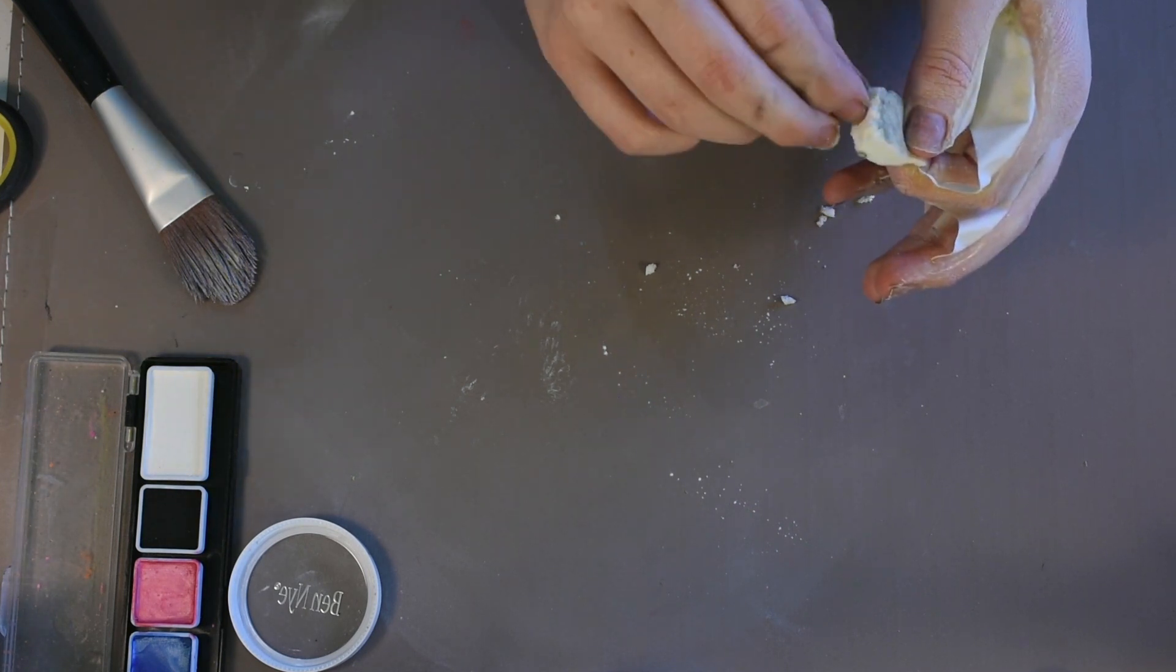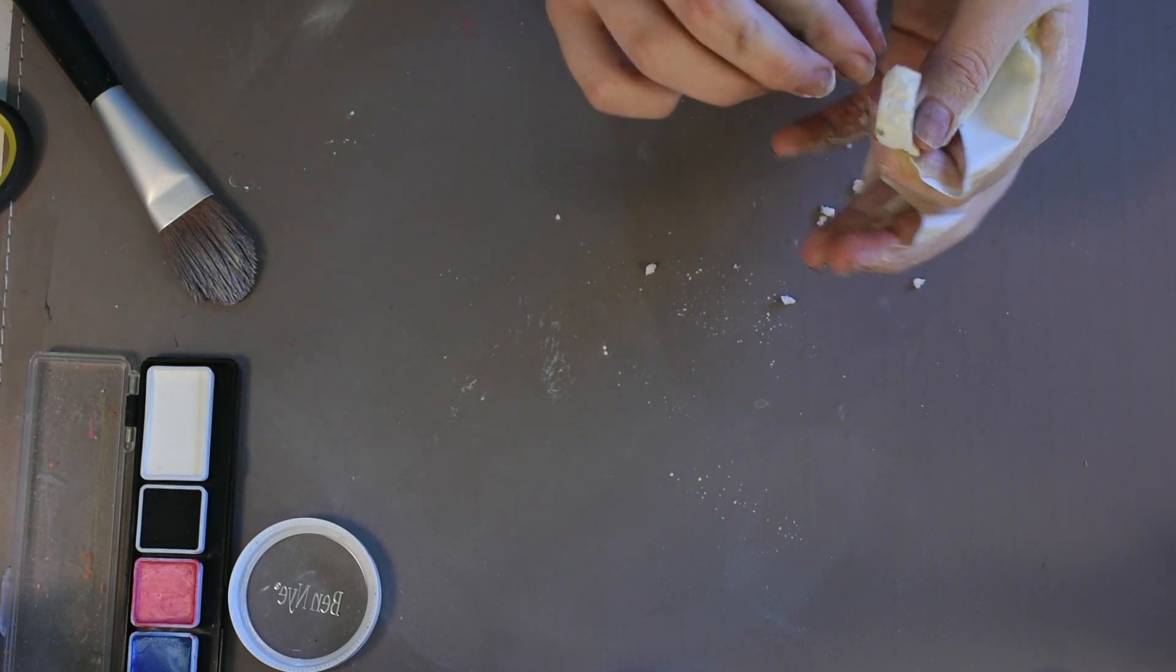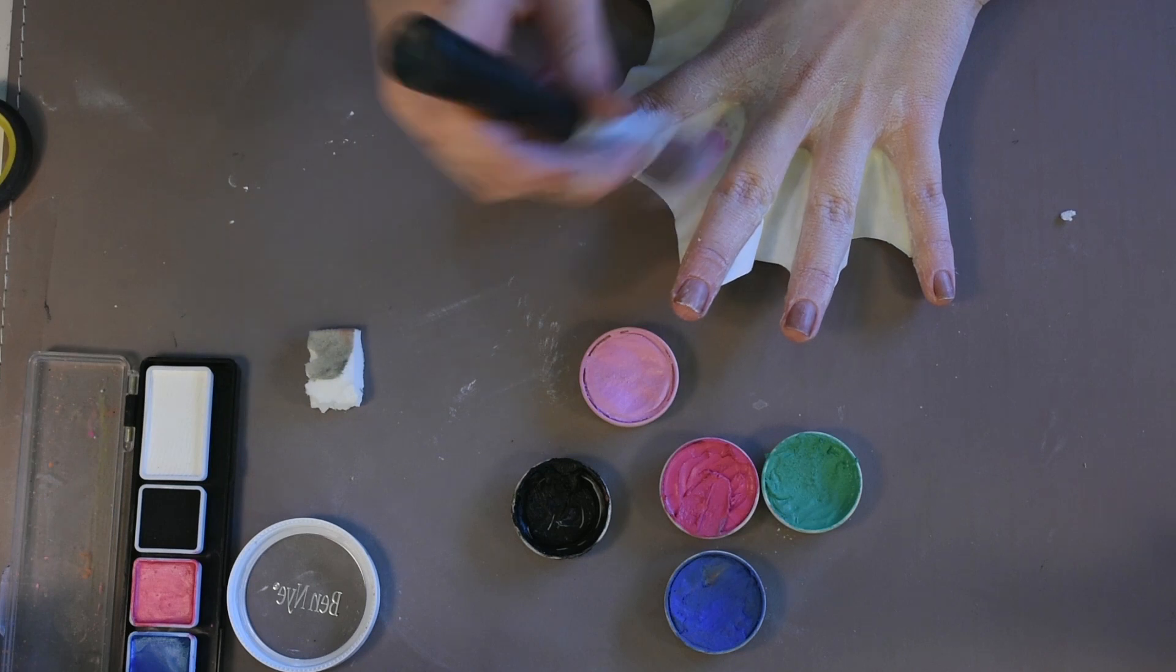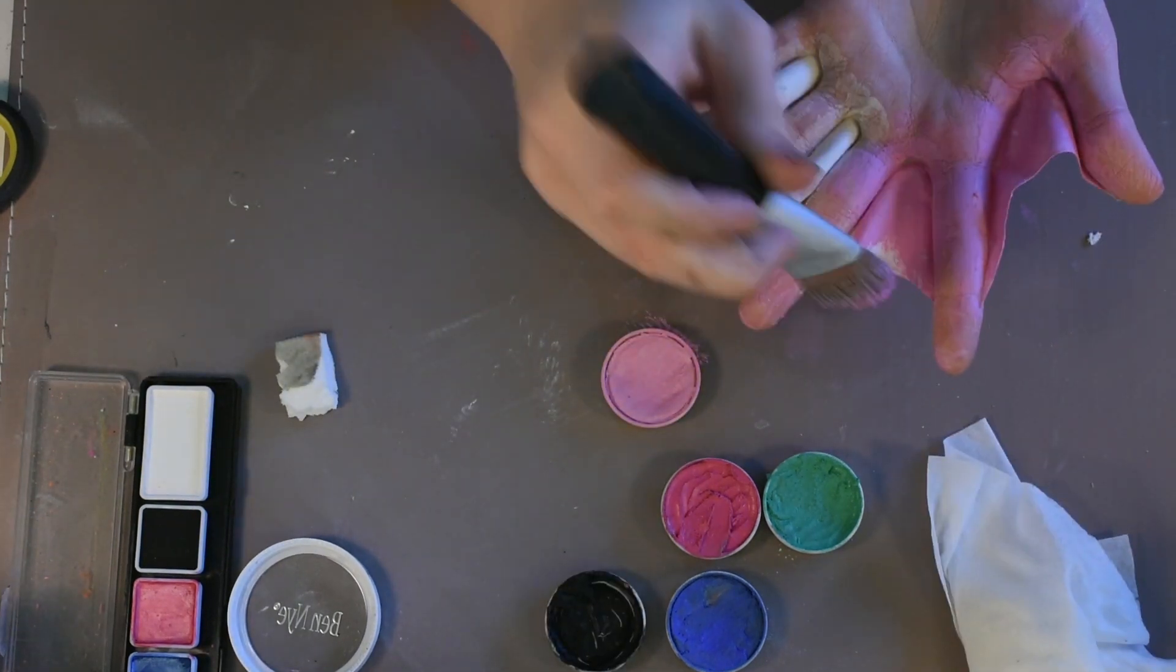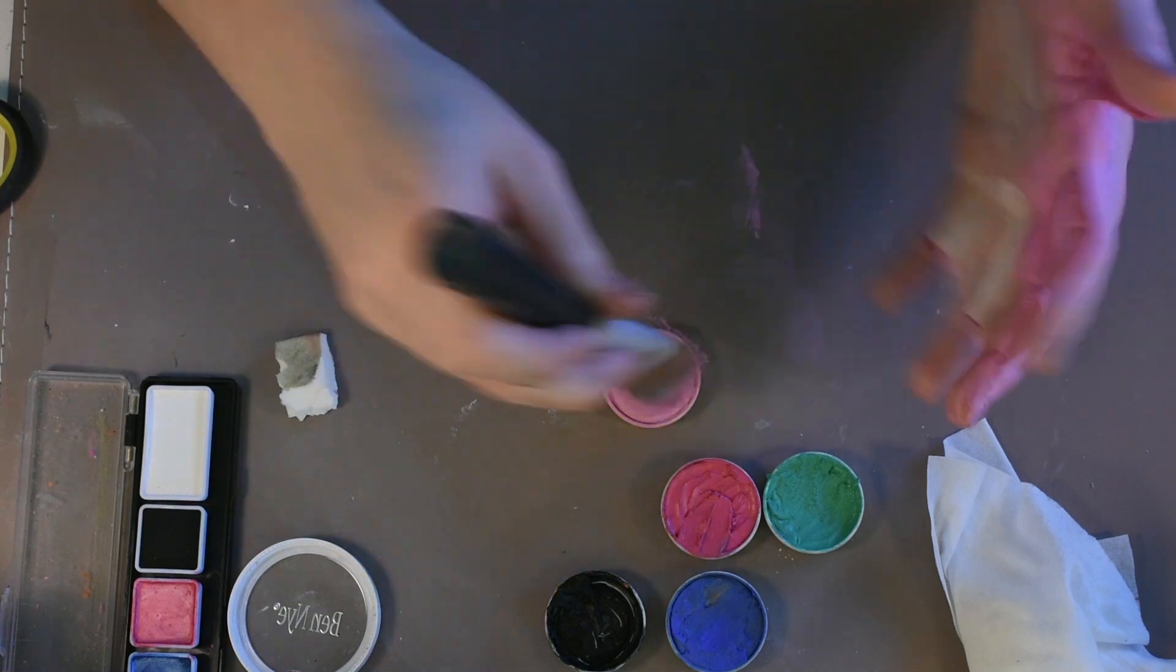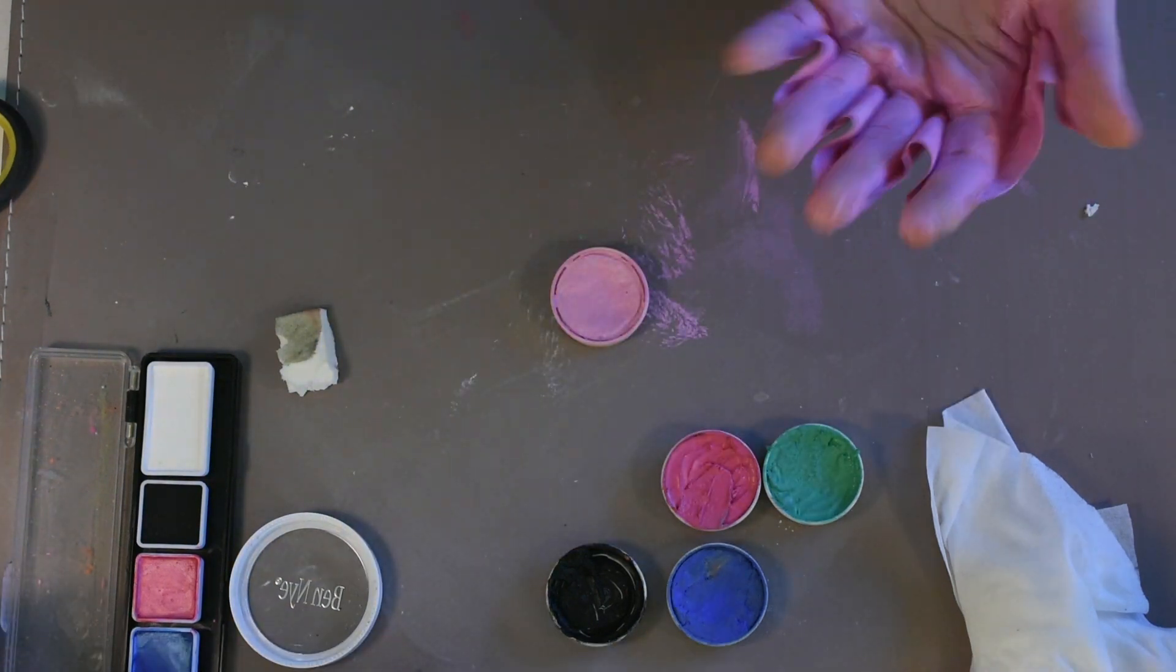Now you want to get a cheap makeup sponge and rip little pieces of it. This will help create a non-uniform texture for the skin later. Taking a light pink grease paint, I went in and covered all the webs, blending it up onto the white but not fully covering the white.